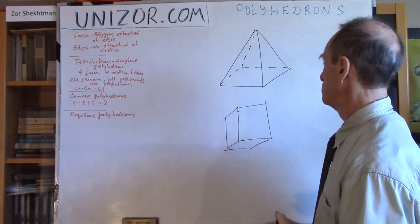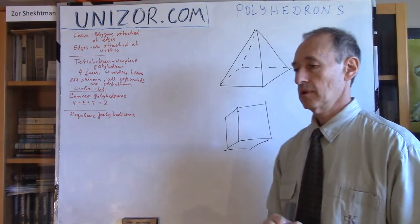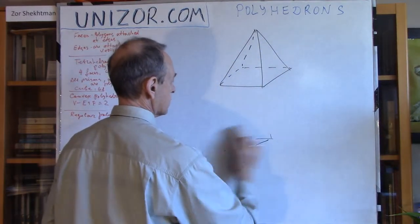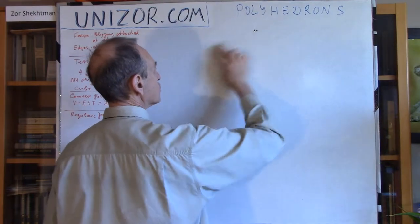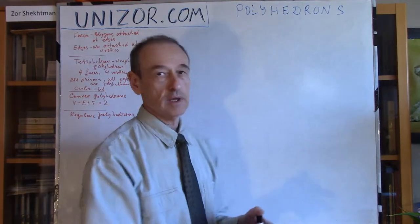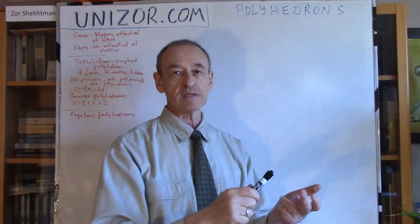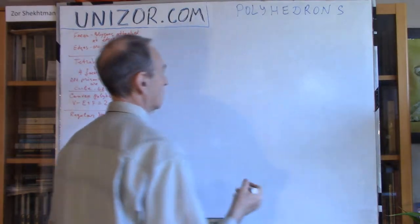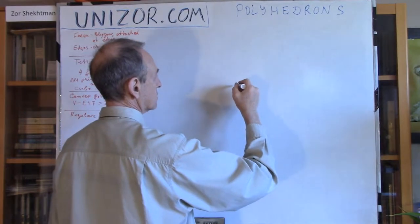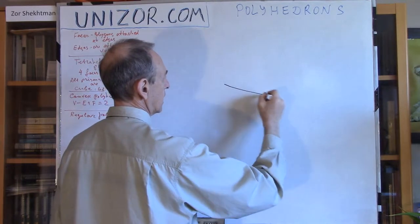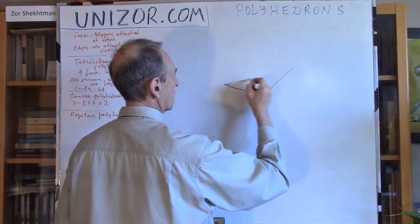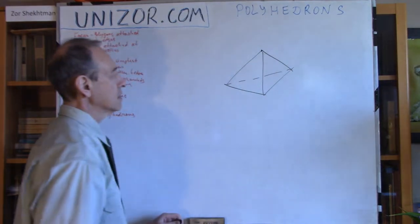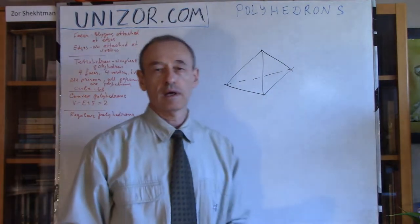Now, what's the simplest polyhedron we can think about? Well, I think the simplest one is the one which has the least number of elements, least number of faces, least number of vertices, least number of edges. Well, I think it's very easy to make a claim that something like a triangular pyramid is a simplest polyhedron.